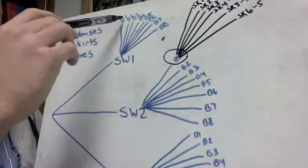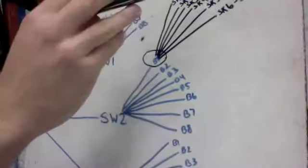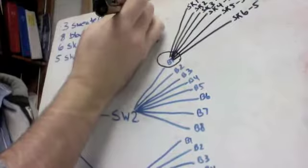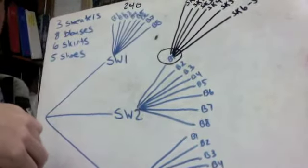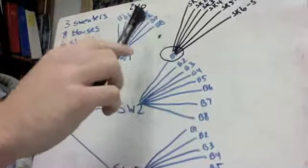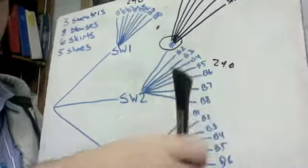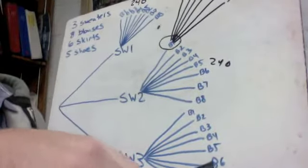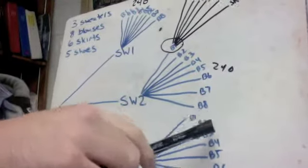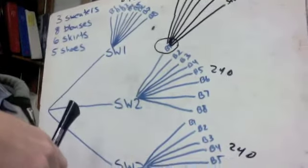So I have 1, 2, 3, 4, 5, 6, 7, 8 blouses with 30's. Okay? 8 times 30 is going to be 240. Down here I got the same thing. I got the same 8 blouses. 8 times 30 for each branch is going to be 240.